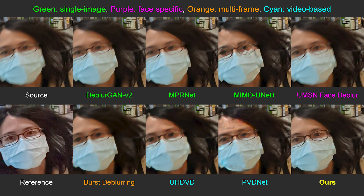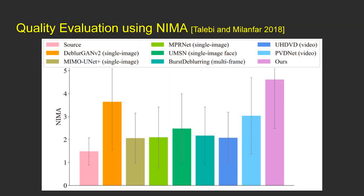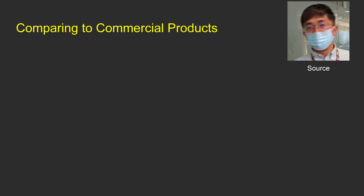Our method also works well when subjects wear face masks, while a face-specific method may fail as it relies on face priors for de-blurring. As our dataset does not have ground truth images, we use the no-reference quality metric NIMA for evaluation. We evaluate all de-blurring results on 100 representative images, and the plot shows that our method outperforms other approaches significantly.